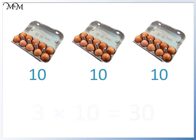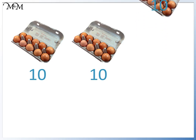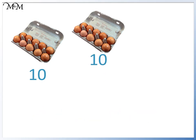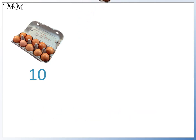If we take a box away, we now have 2 lots of 10. 2 times 10 equals 20. We can take away another box to leave 1 lot of 10, which equals 10.